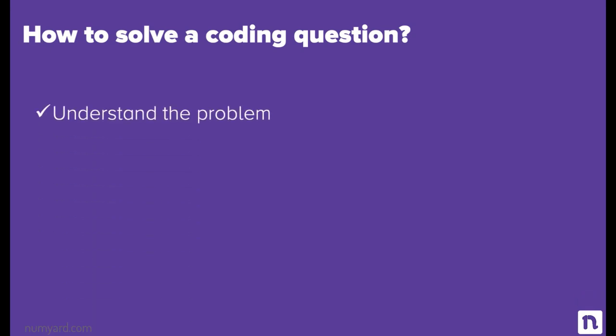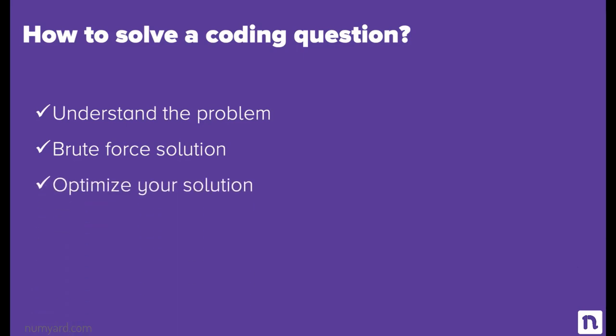The first step is to make sure that you fully understand the problem they are asking. Work through any example inputs if provided. The next step is to figure out a brute force solution to the problem — no coding is required at this point. The next step is to optimize your solution. Take some time to figure out the absolute best solution you can in this period of time. When comparing solutions, consider the time complexities. The next step is to code up your solution. Even if it's not optimal, it's better to have a complete non-optimal solution than an incomplete optimal solution.